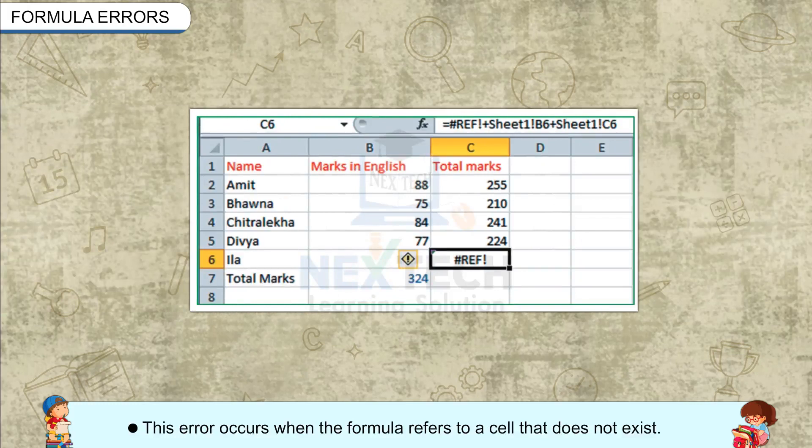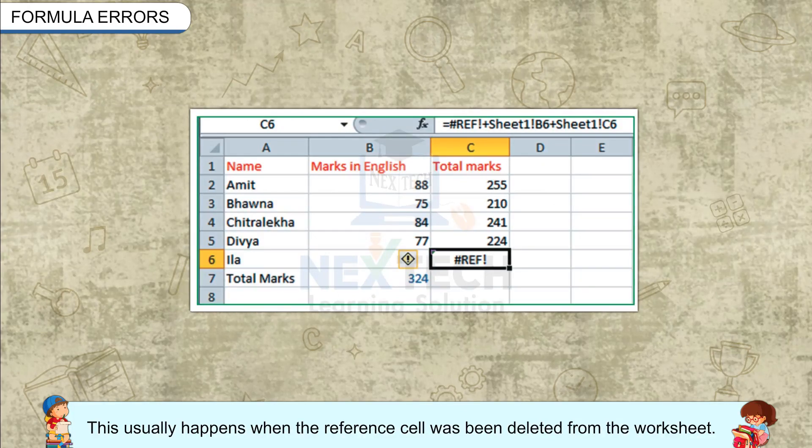This error occurs when the formula refers to a cell that does not exist. This usually happens when the cell reference has been deleted from the worksheet.